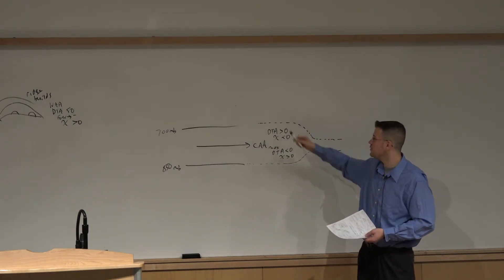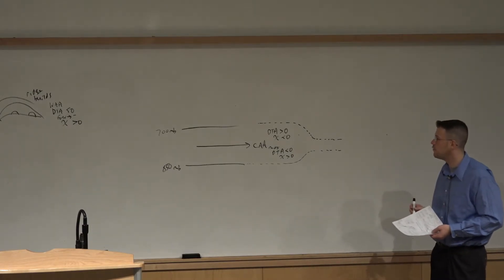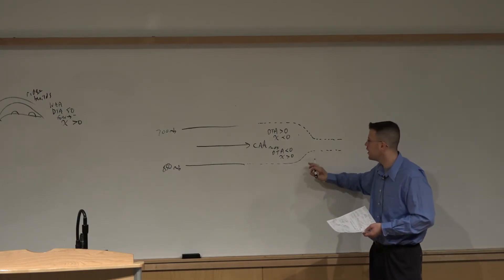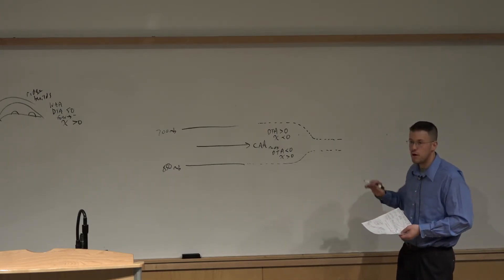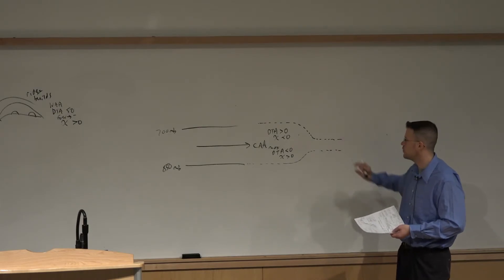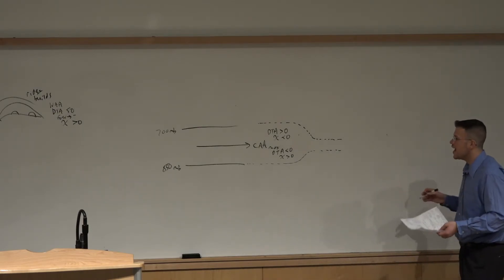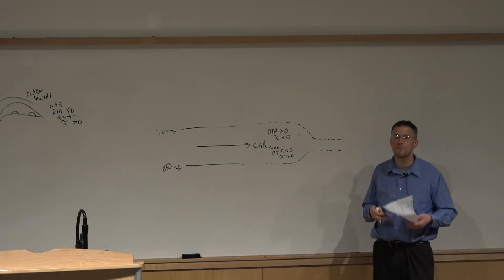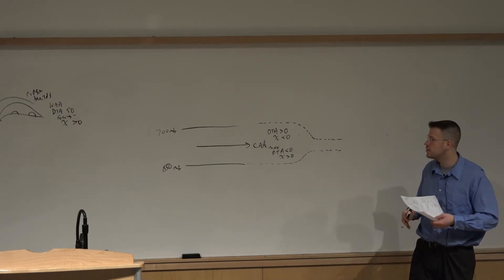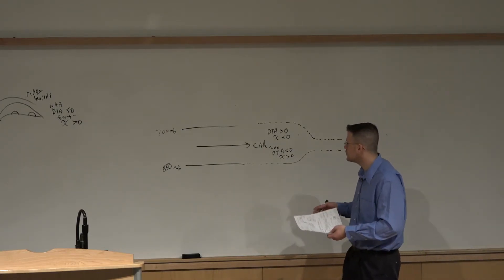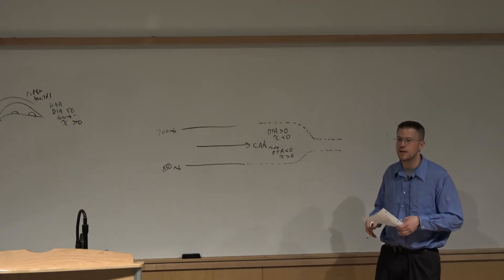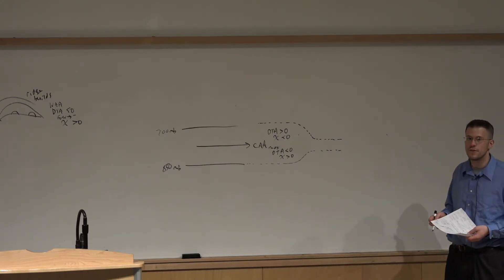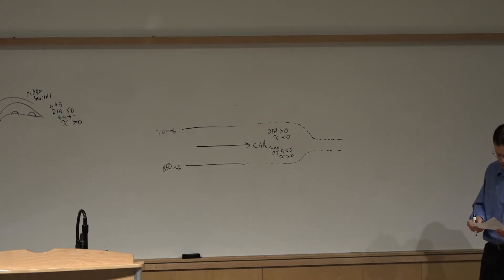No memorization is needed at all: if we have cold advection occurring, we have height falls occurring above the level of maximum cold advection in order to accomplish the thinning of the column, which occurs in tandem with rising heights below the level of maximum cold advection. We also have pressure rises occurring as the colder, denser air mass corresponds to an increase in density and pressure in the lower part of the atmosphere.